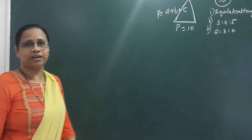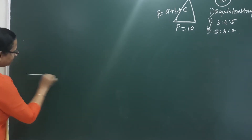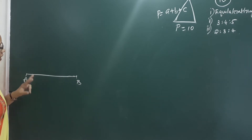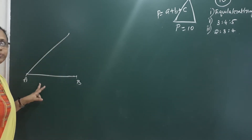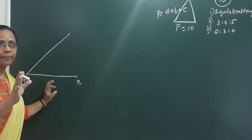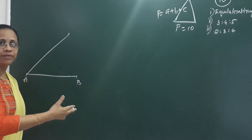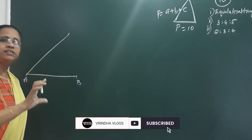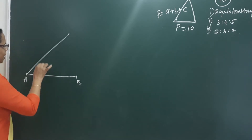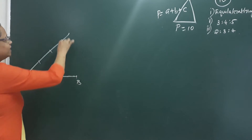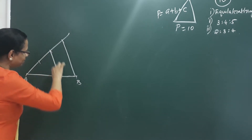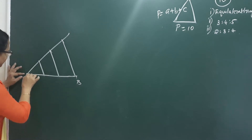First, we look at the equilateral triangle. It's 10 centimeters long, with sides A and B. For an equilateral triangle all 3 sides are equal, so each side is 10 divided by 3. We draw a 10 cm line and divide it into 3 equal parts. Using a set square and parallel lines, we join the third part points, putting parallel lines to join here.